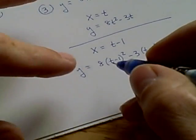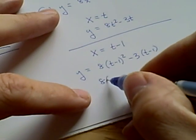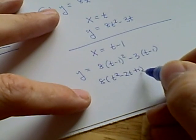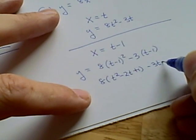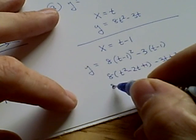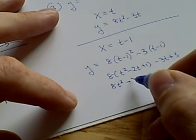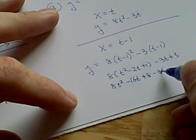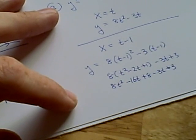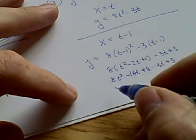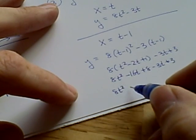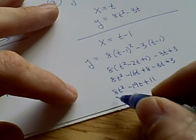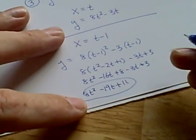To 8(t² - 2t + 1) - 3t + 3. Distribute: 8t² - 16t + 8 - 3t + 3. To combine some like terms here, I'll have 8t² - 19t + 11. So this is also a parameterization.